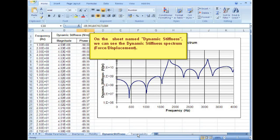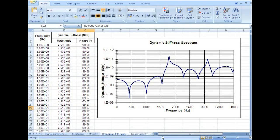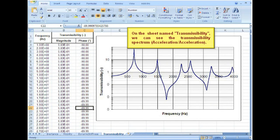On the sheet named Dynamic Stiffness, we can see the Dynamic Stiffness spectrum. On the sheet named Transmissibility, we can see the Transmissibility spectrum.